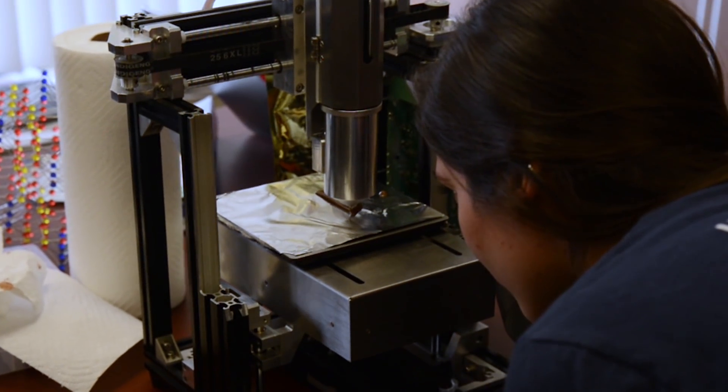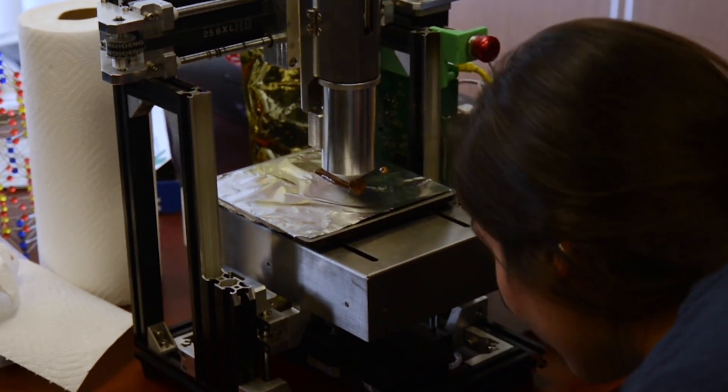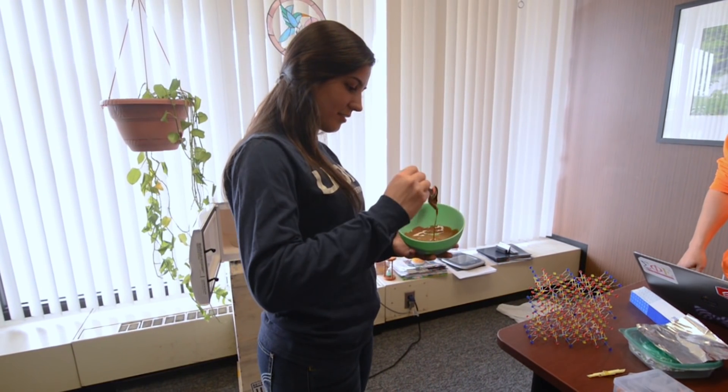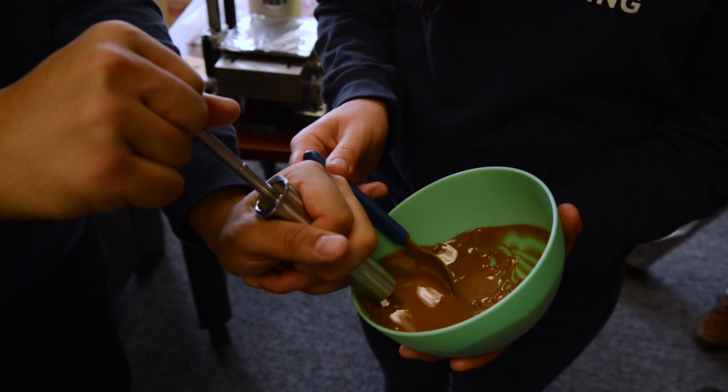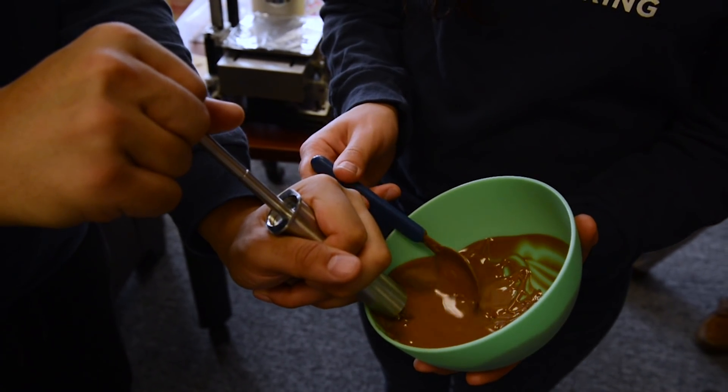Our senior design project is designing a process for 3D printing chocolate. We begin by tempering our chocolate to achieve the appropriate crystal structure, specifically Polymorph 5.